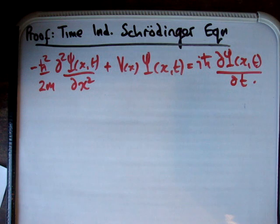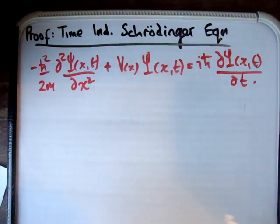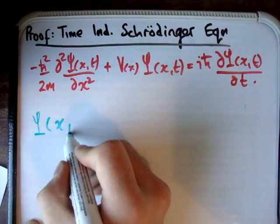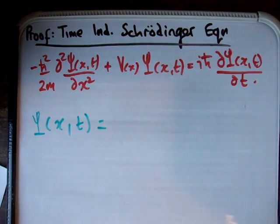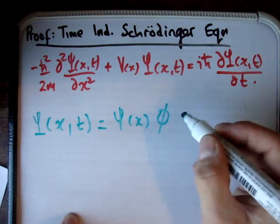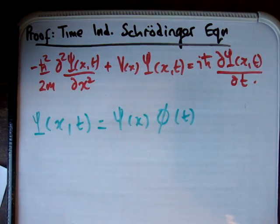The next thing I'm going to do is assume separation of variables. You might ask why we can assume that — the answer is that it's just a trick; it's something that people try and it's found to work. Separation of variables assumes that a function of two variables, in this case x and t, can be broken up into two functions each of only one variable: small psi of x and capital phi of t.